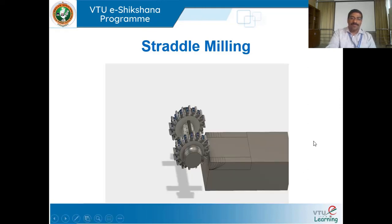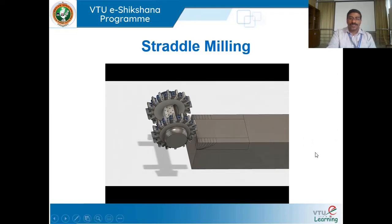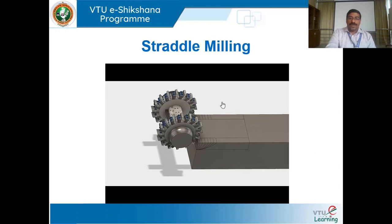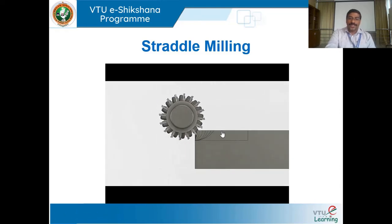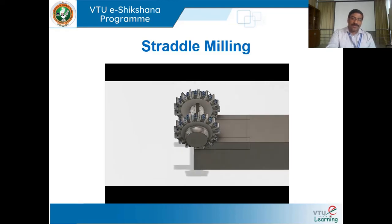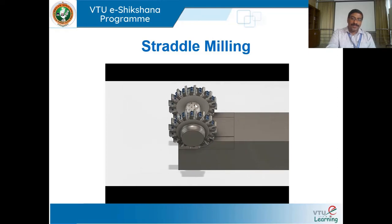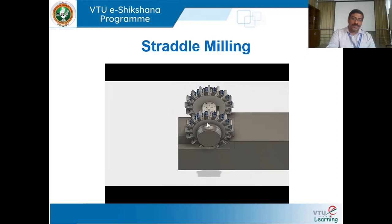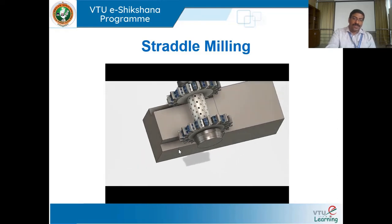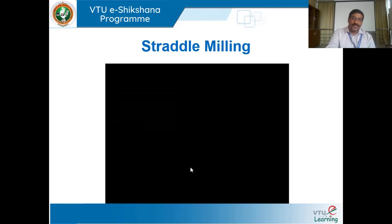In the animated video you can see the two cutters mounted on the arbor, separated by spacers. The unwanted material is removed on both sides simultaneously, giving two fresh vertical surfaces at one time. Performing two operations simultaneously is known as straddle milling, performed on a horizontal milling machine.